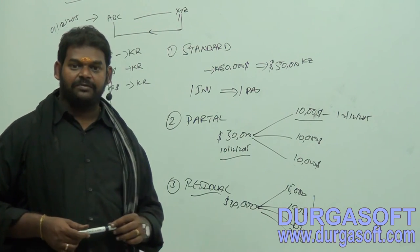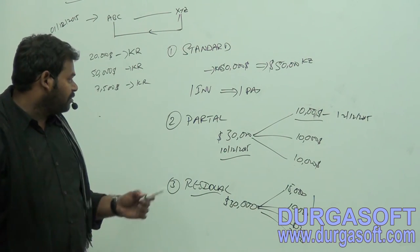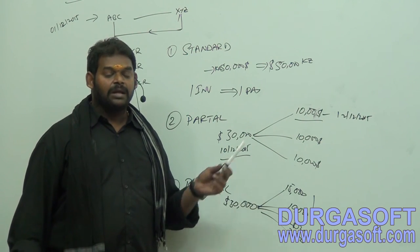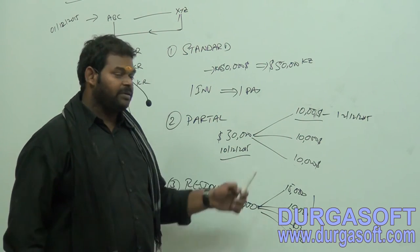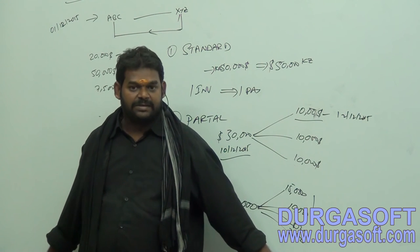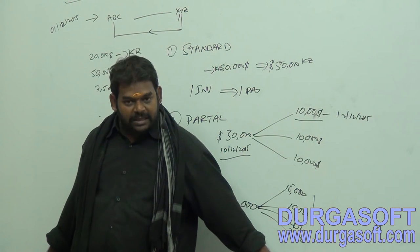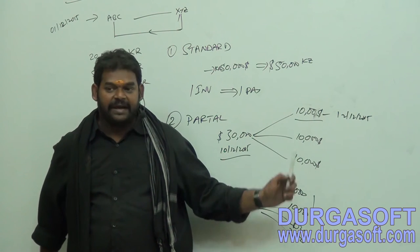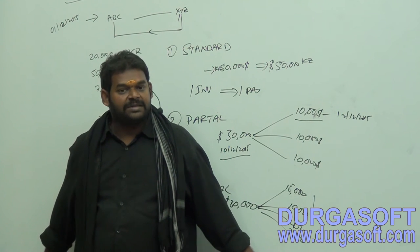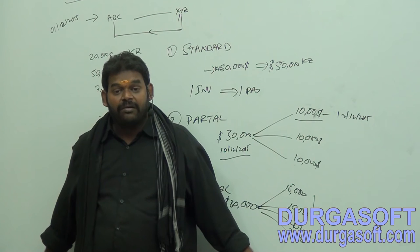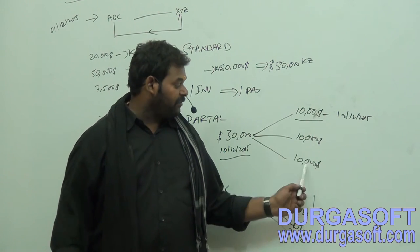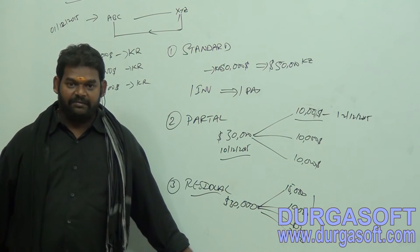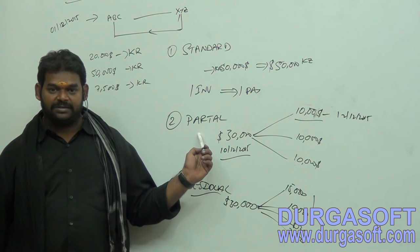In Partial, one invoice amount can be cleared in one or more payment parts and those payment parts must be equal. When clearing some part of the invoice, the system will not clear the whole invoice. Only when clearing the final part does the system clear the complete invoice. That is Partial.